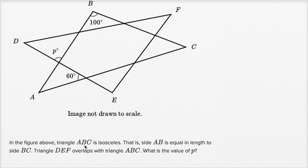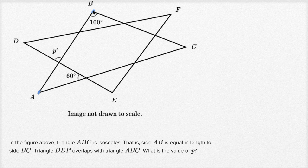In the figure above, triangle ABC is isosceles. So that's triangle ABC, that big triangle. It's isosceles, which means two of its sides are congruent, have the same length.